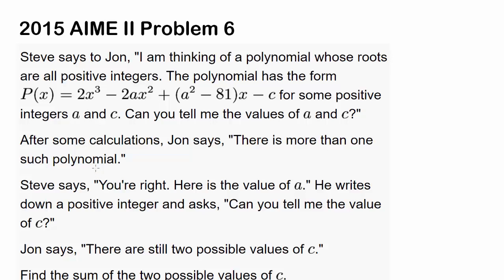Let's try 2015 AIME II problem 6. We have a conversation going on between Steve and John. Steve says to John, I am thinking of a polynomial whose roots are all positive integers. The polynomial has the form P(x) = 2x³ - 2ax² + (a² - 81)x - c for some positive integers a and c. Can you tell me the values of a and c?